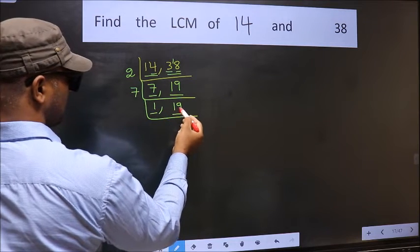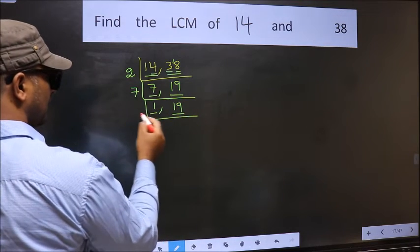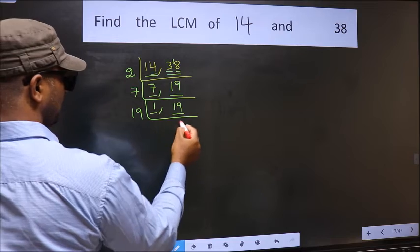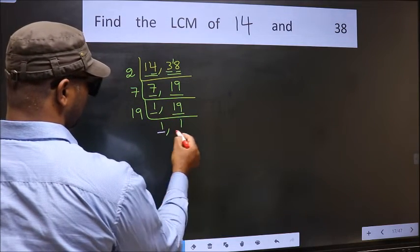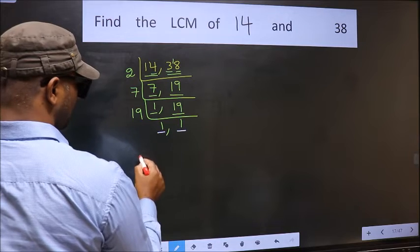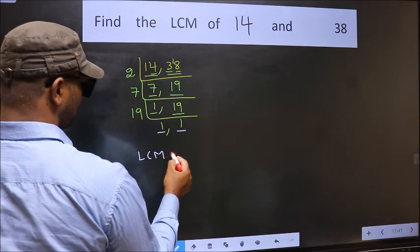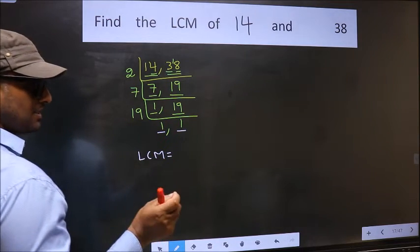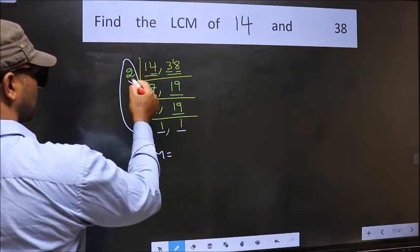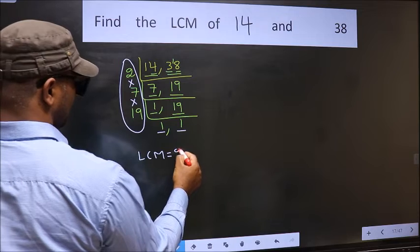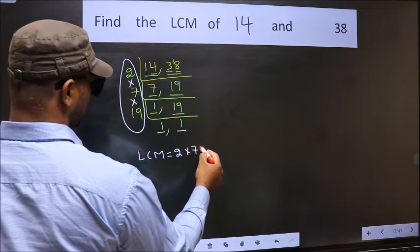So focus on the other number 19. 19 is a prime number. So 19 ones, 19. We got 1 in both the places. So our LCM is the product of these numbers. That is 2 into 7 into 19.